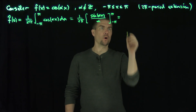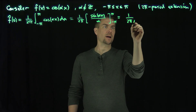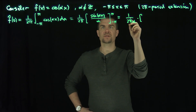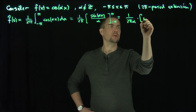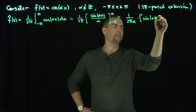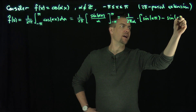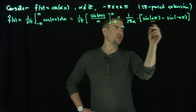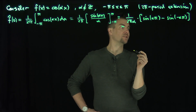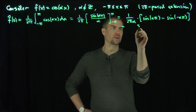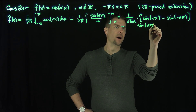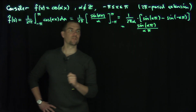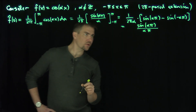So we're going to have 1 over 2πα, and then we have sine of αx evaluated at the limits: sine(απ) minus sine(-απ). Since sine is an odd function, we get two of those terms, giving us 2sin(απ), which simplifies to sine(απ) over απ. That's the zero mode of this function.